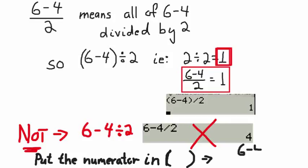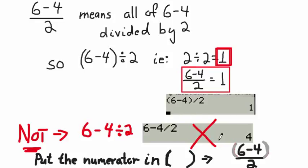You have to put the numerator in brackets if it's more than just a single digit — you have to put the numerator in brackets when entering it into the calculator. We don't bother writing the brackets in math notation because we all know they're there. But you've got to tell the calculator they're there. We just got a bit lazy as mathematicians and assumed everyone knows the top is separate.